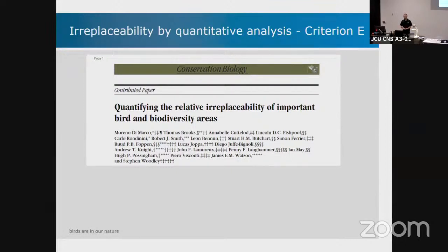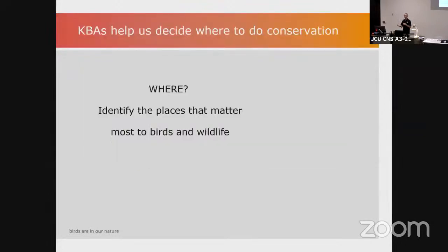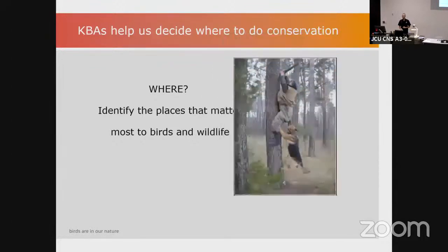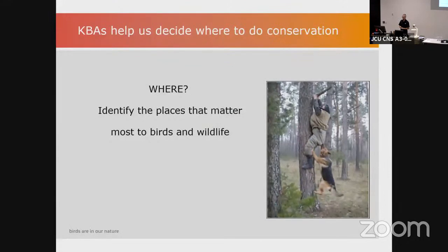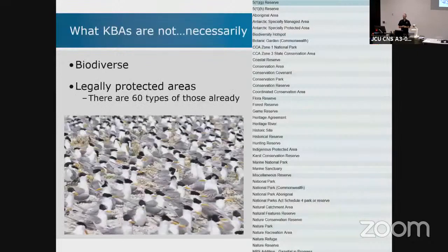That's all probably a bit confusing. When I give this talk to a more volunteer audience, I sum it up like this: KBAs are there to help us identify where to do conservation — we just want to make sure we're barking up the right tree. KBAs could trick you into believing two things: one, that they're biodiverse — that's not necessarily true. What they do is contribute to the biodiversity of the globe.